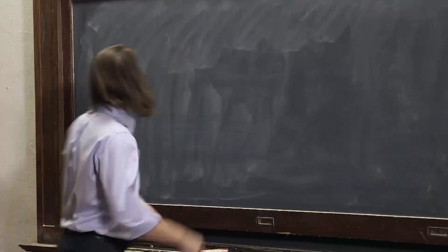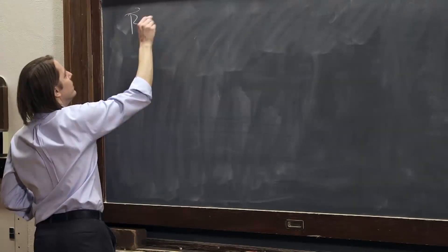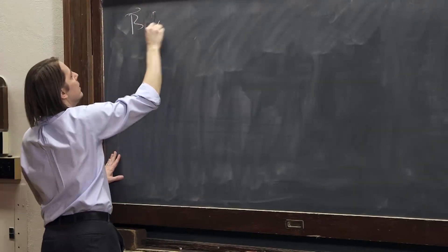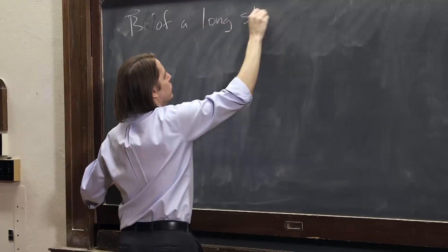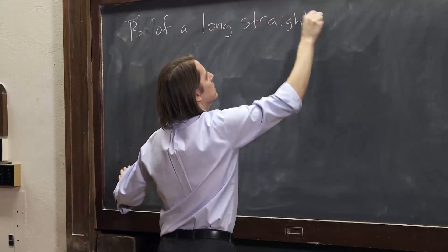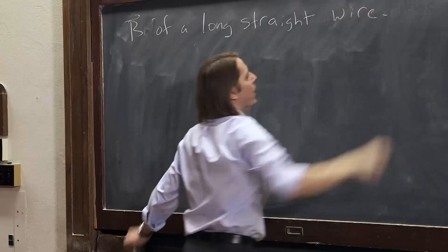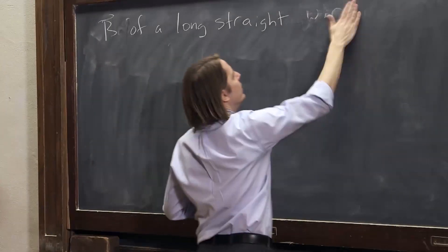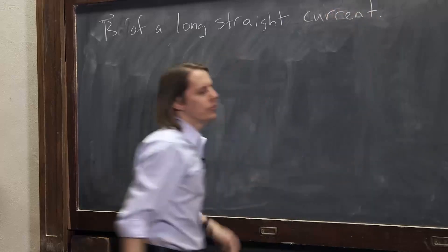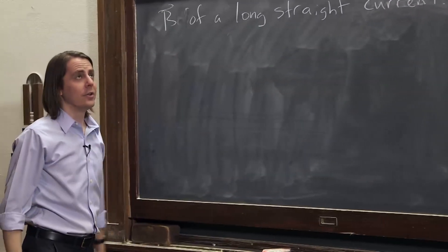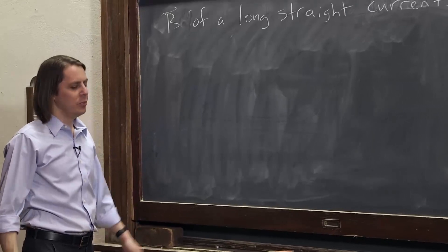Let's use the Biot-Savart law to get the B field of a long straight current. I'm sorry, a long straight current. We're always going to use the word current rather than wire. So wire doesn't have to carry a current, but a current has to flow in a wire, we could say.